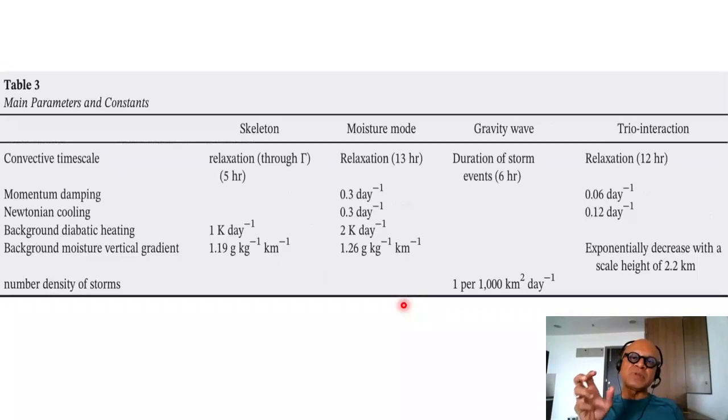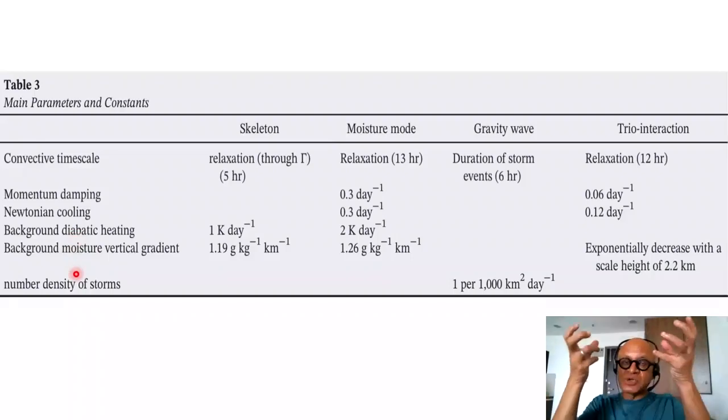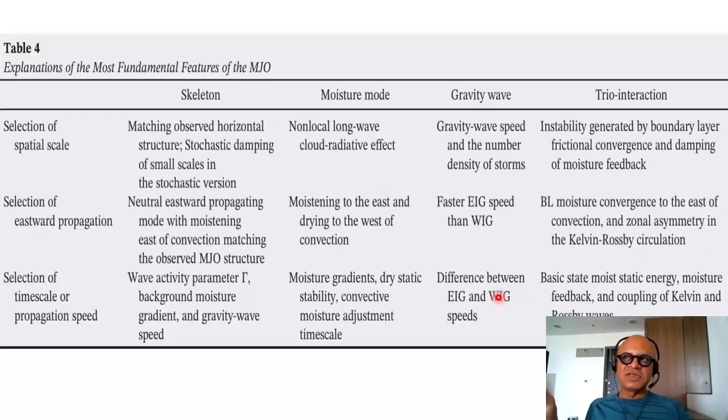So it again comes down to whether moisture plays a major role or not and whether moisture is a diagnostic variable or a prognostic variable. Main parameters and constants focus on convective time scale, momentum damping, Newtonian cooling, background diabatic heating in which MJO timescale diabatic heating is happening, background moisture vertical gradient, which provides information about the planetary scale background gradient over which MJO perturbations happen, number density of storms. So here, gravity wave makes some assumption, one per thousand kilometers squared per day. You remember, gravity wave doesn't require convection, it just assumes that eastward and westward propagating gravity waves together can produce MJO-like features.